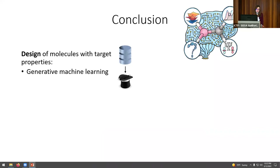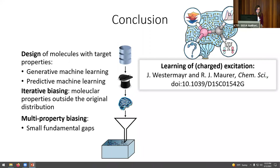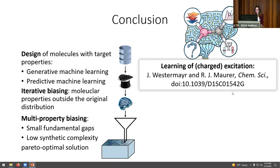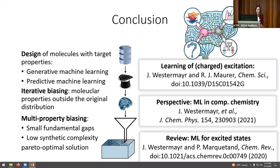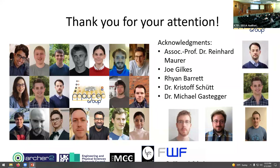In conclusion, by combining generative and predictive machine learning we can design new molecules, and by iteratively biasing we can leave the property space of the original dataset. Multi-property biasing is also possible but leads to a Pareto-optimal solution — we have to find the best of both worlds. If you're interested in the predictive model, you can find it in the referenced paper. We've also written a perspective on machine learning in computational chemistry together with Kristof Schütt and Michael Gastegger, and there's a review on machine learning for excited states.